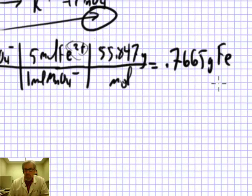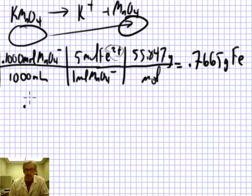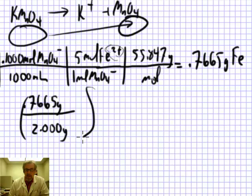So to find the answer to the question, I take that 0.7665 grams of iron, I divide by 2.000 grams, which is the total mass of my ore, and then I multiply by 100 to make it a percentage. When I do that arithmetic, I get 38.33%.